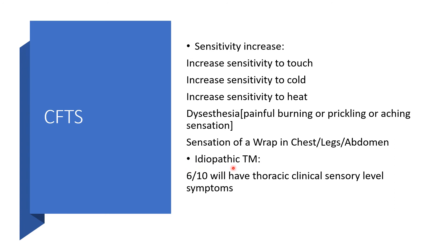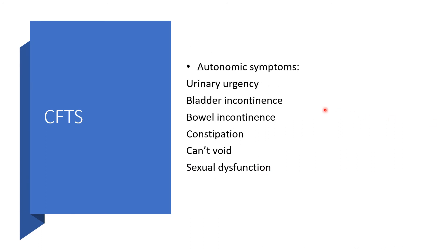In idiopathic transverse myelitis, 60% will have thoracic-level clinical sensory symptoms. Autonomic symptoms will include urinary urgency, bladder incontinence, bowel incontinence, constipation, and the individual might be unable to void or may experience sexual dysfunction.